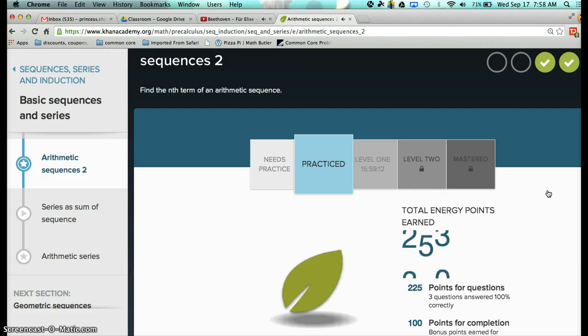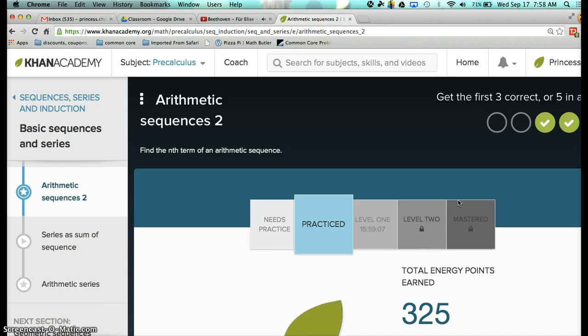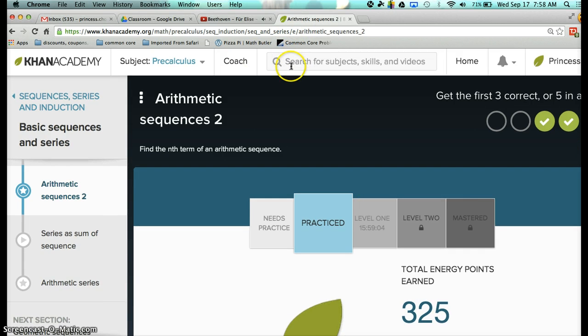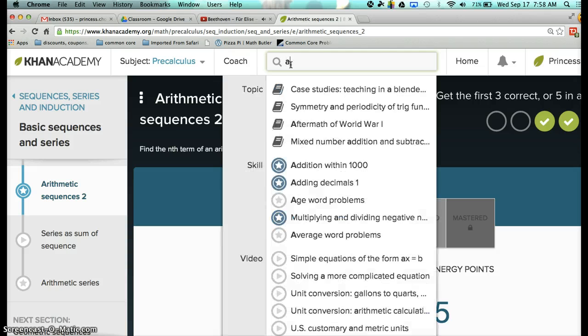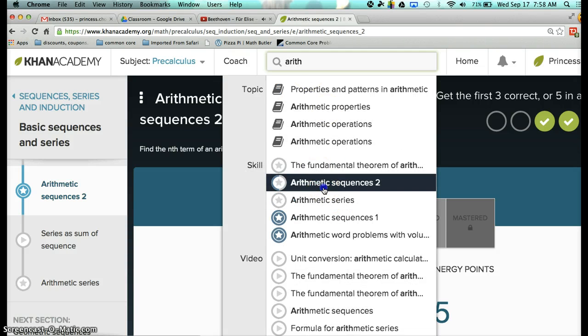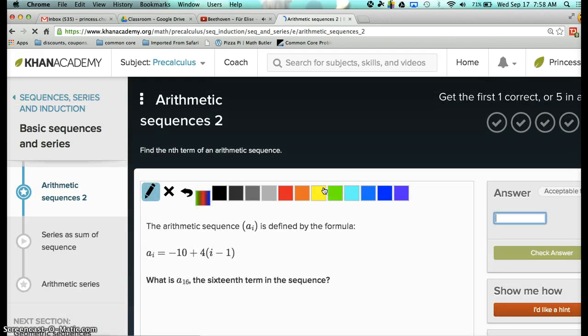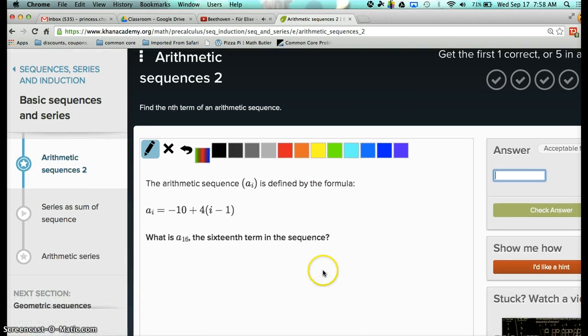You got to do the 15 minus 1 first. So 15 minus 1 is 14, and then I got to multiply the negative 3, that's the next step. Some people are just getting it wrong for no reason, because they don't know how to do PEMDAS. Parentheses, and then multiplication, and then you add the 5. All right, so let's move on to the next question. So they gave me credit for arithmetic sequences too. Let me try arithmetic sequences too again. Yeah, this is, what is A sub 16? So you plug in 16 into the I, and you calculate it. 16 minus 1 is, first you do the parentheses, 16 minus 1 is 15, 15 times 4, and then you do multiplication. 15 times 4 is 60, minus 10 is 50.